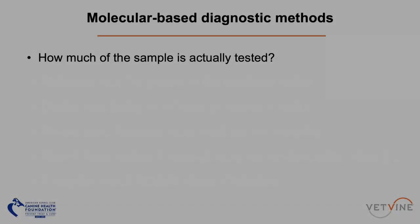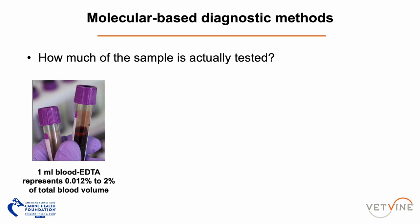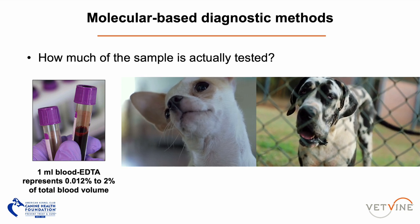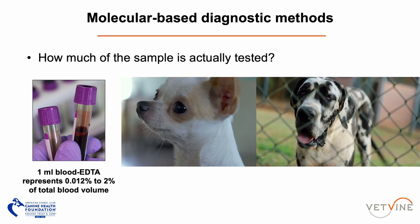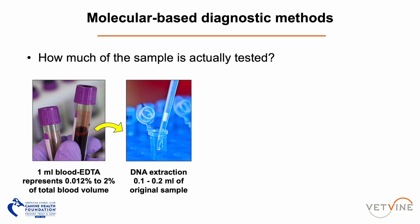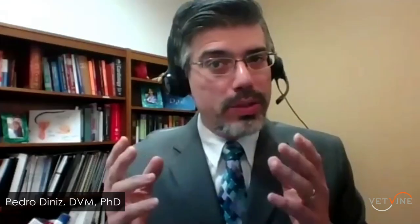Let's walk through what the lab does when the sample arrives. Normally, we collect between 1 mL and 2 mL of blood, which may represent between 2% and 0.01% of the total blood volume of that animal. In the lab, we normally use 100 to 200 microliters of the original blood sample — so 0.1 to 0.2 mL — to do the DNA extraction. That's around one-tenth of the original 1 mL submitted.